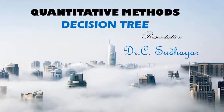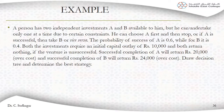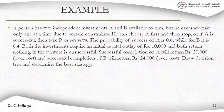A person has two independent investments A and B available to him — either he can open a coffee shop or a garage. There are certain conditions: he can undertake only one at a time due to constraints, meaning he doesn't have enough money to start two businesses at once. So he can do any one business at the beginning.